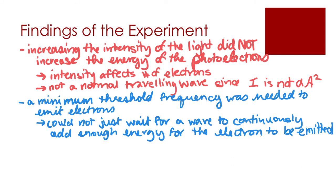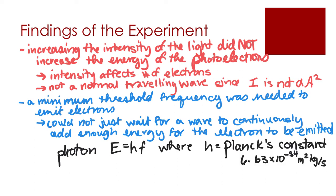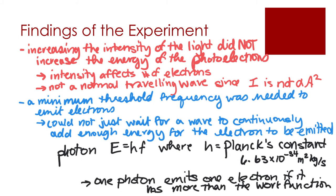So what did Einstein tell us then? Well, light must also have a particle nature, which he called a photon. He said that the energy is related to its frequency, and we can use the equation E equals HF. H is Planck's constant, and if we think about the graph that we just had, it's actually the gradient of that graph. And finally, we have that one photon will emit one electron if it has more than the work function.